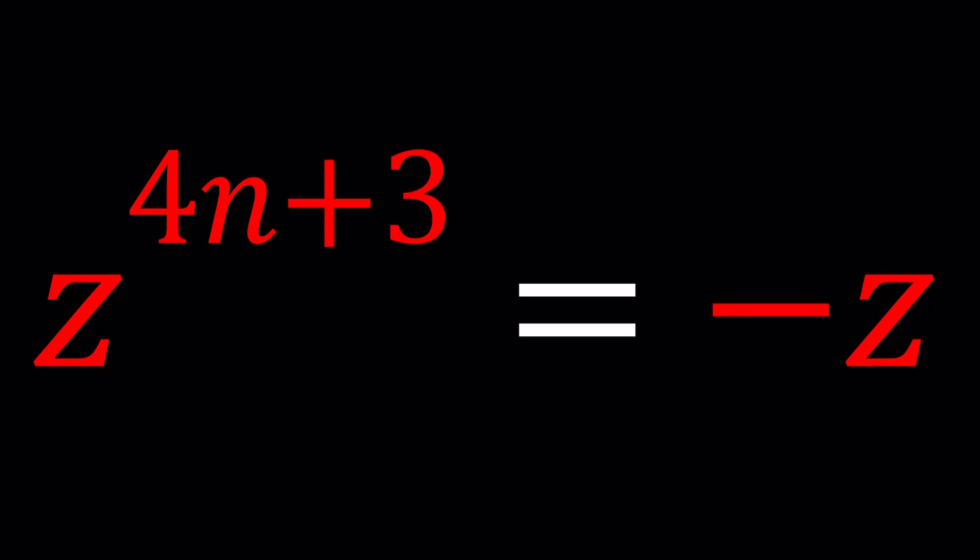Yes, I did come up with this idea but anyone can come up with something like this. Obviously no big deal. We have z to the power 4n plus 3 equals negative z. n is an integer.